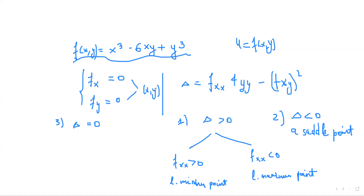Next, we calculate delta, which is the quadratic form involving the second-order derivatives of the function. We find the second-order derivative f_xx, the second-order derivative f_yy, and subtract the mixed derivative f_xy squared. So delta equals f_xx · f_yy minus f_xy squared. If delta is positive, the point is an extreme point. If f_xx is greater than zero we get a local minimum, and if f_xx is less than zero we get a local maximum. If delta is less than zero, the function does not have an extreme point there.